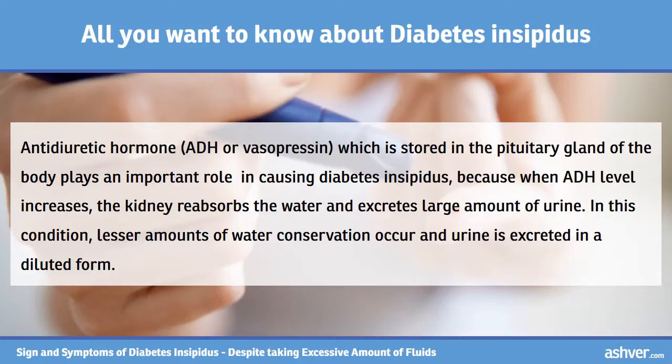Antidiuretic hormone, ADH or vasopressin, which is stored in the pituitary gland of the body, plays an important role in causing diabetes insipidus, because when ADH level decreases, the kidney cannot reabsorb water and excretes large amounts of urine. In this condition, lesser amounts of water conservation occur and urine is excreted in a diluted form.